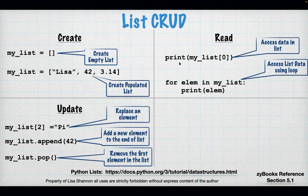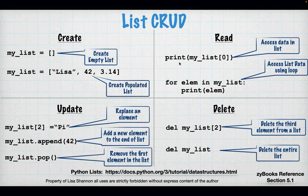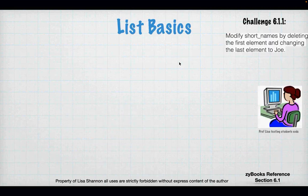There's a URL to the Python data structures page — there's so much you can do that we don't have enough time to cover in this class. To delete, you can remove a single element using del, which shrinks the list by one, or you can delete the whole list. del is a keyword that means delete.